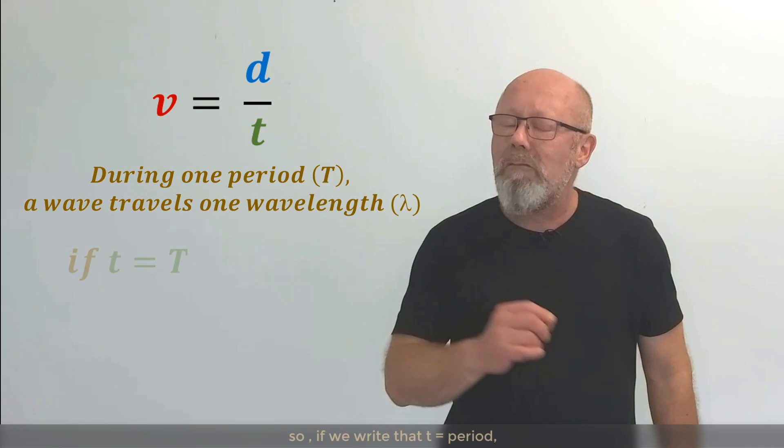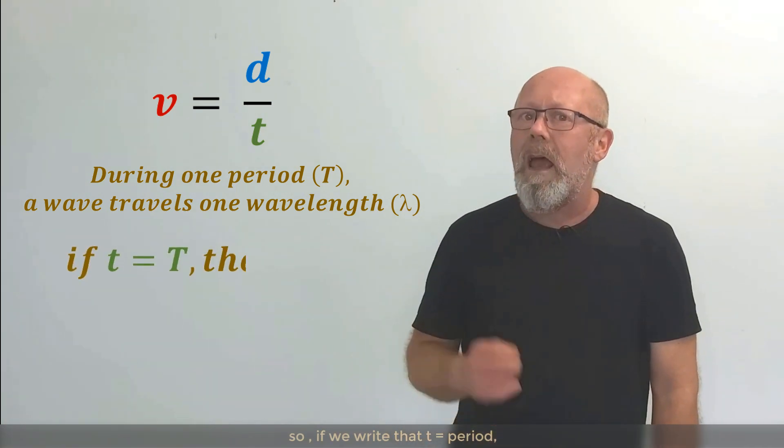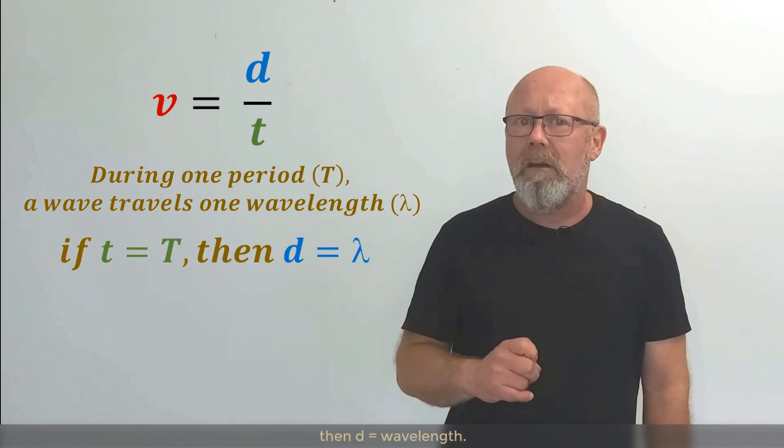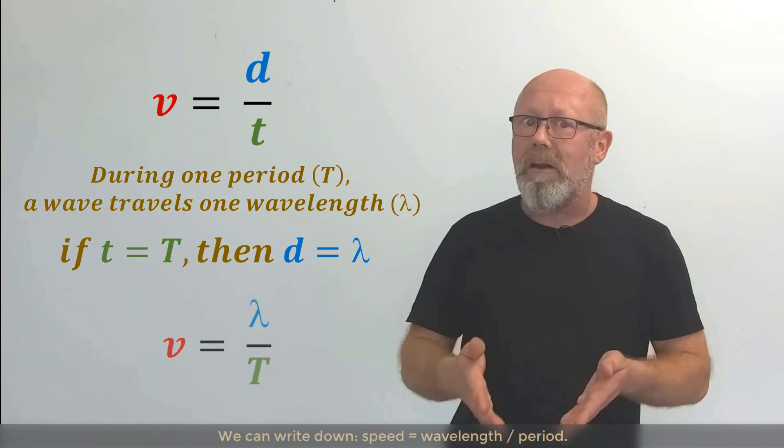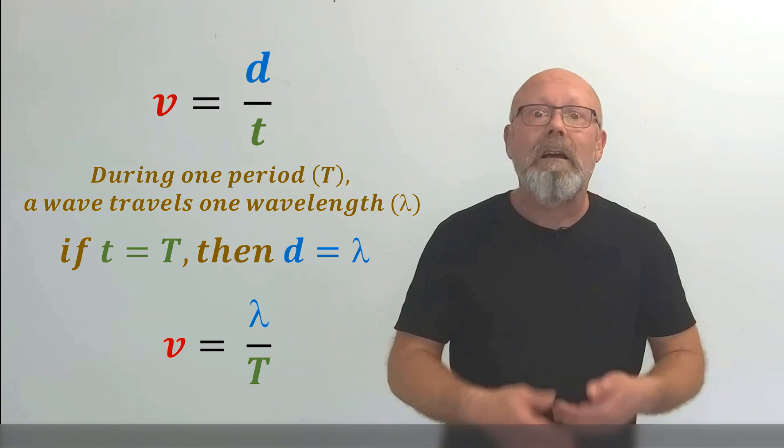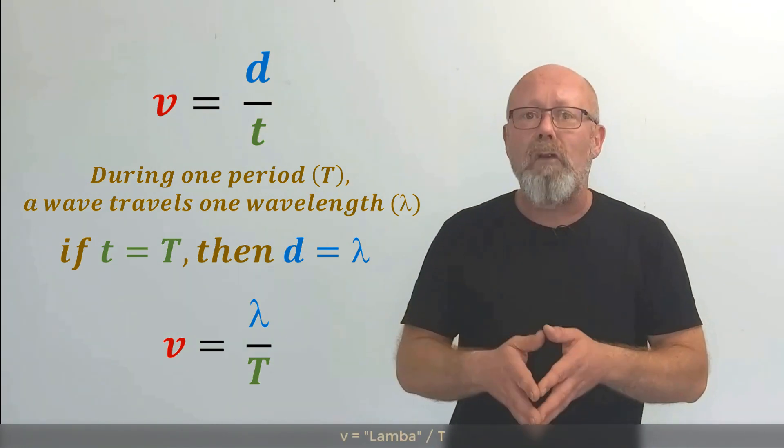So if we write that little t equals period and little d equals wavelength, we can write down speed equals wavelength over period, right? V equals lambda over big T.